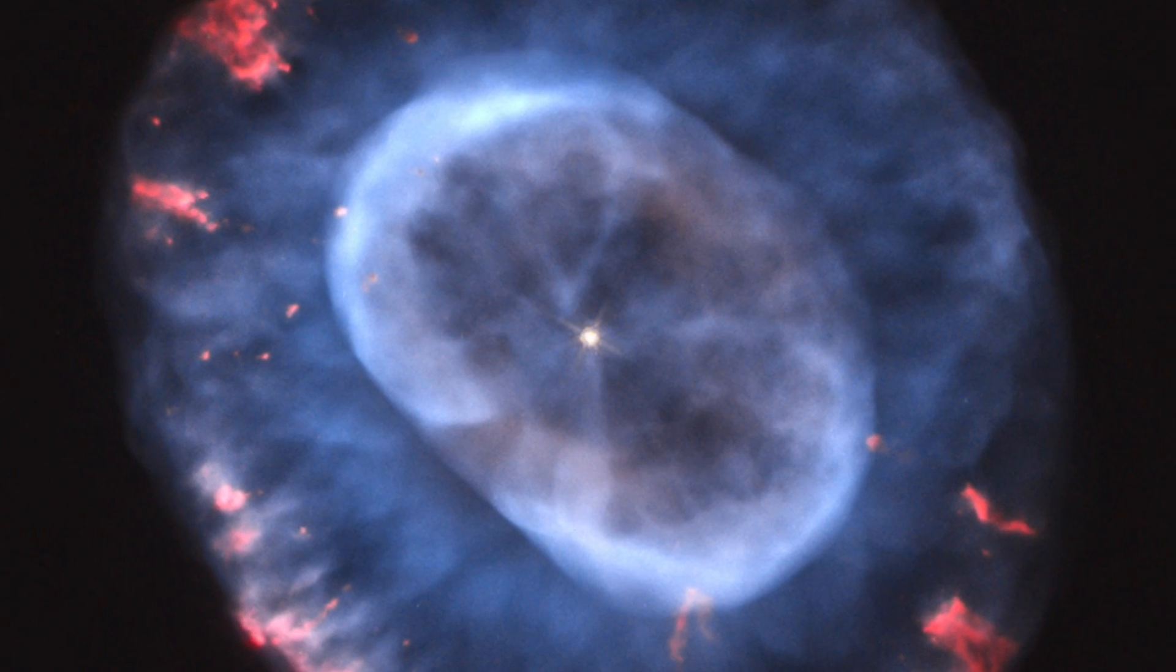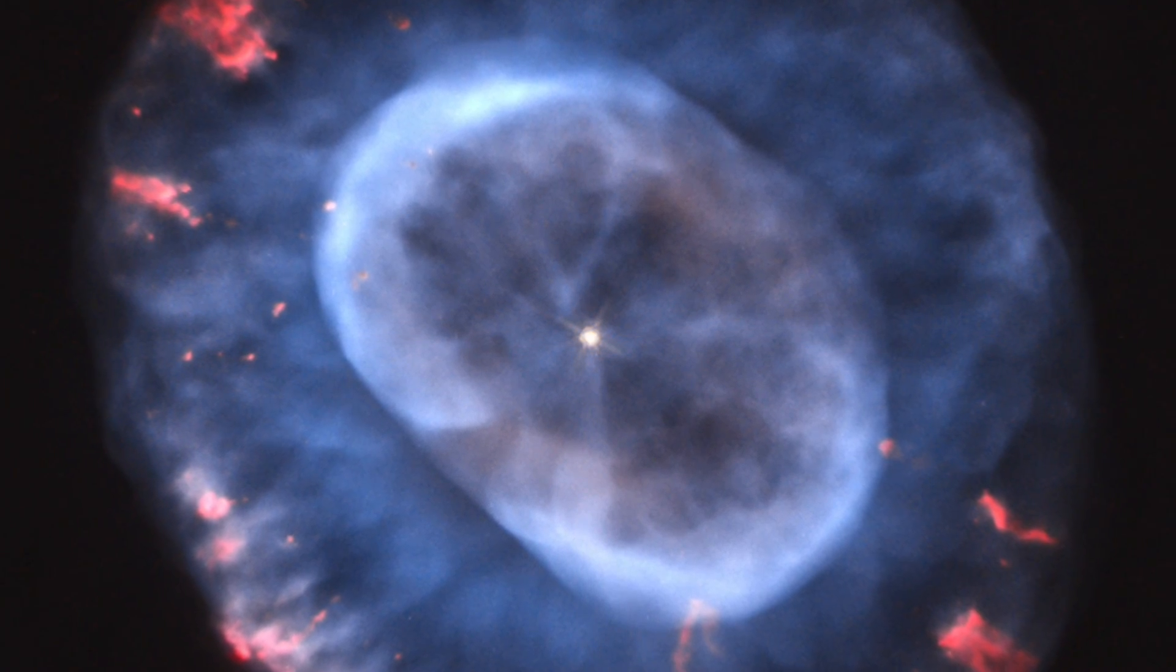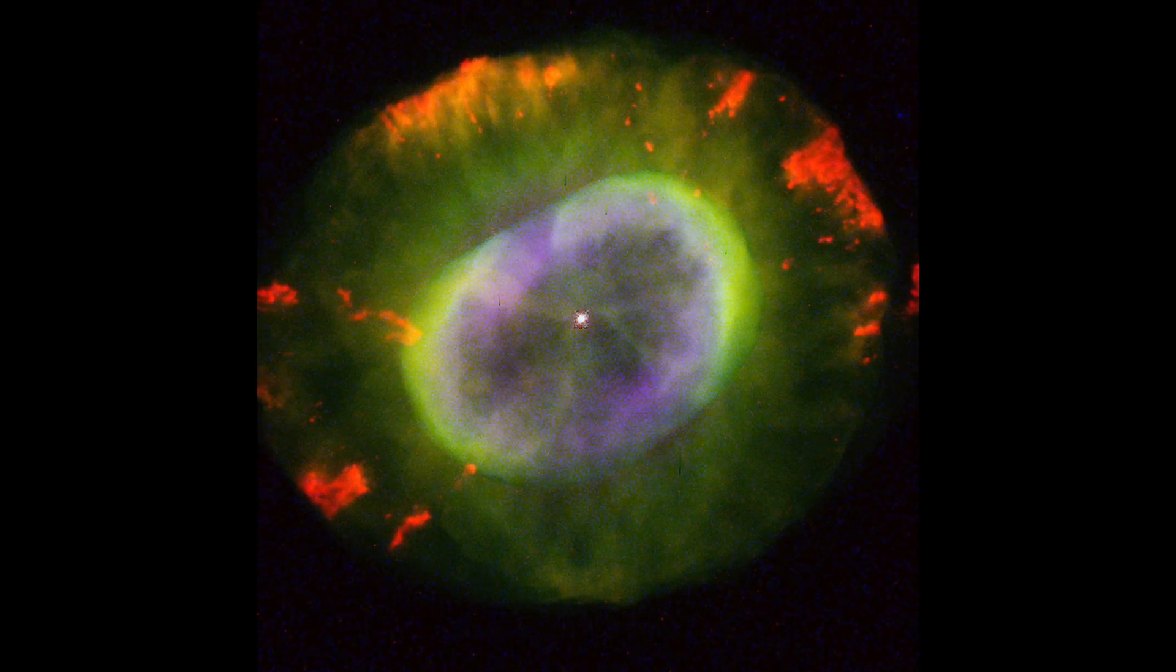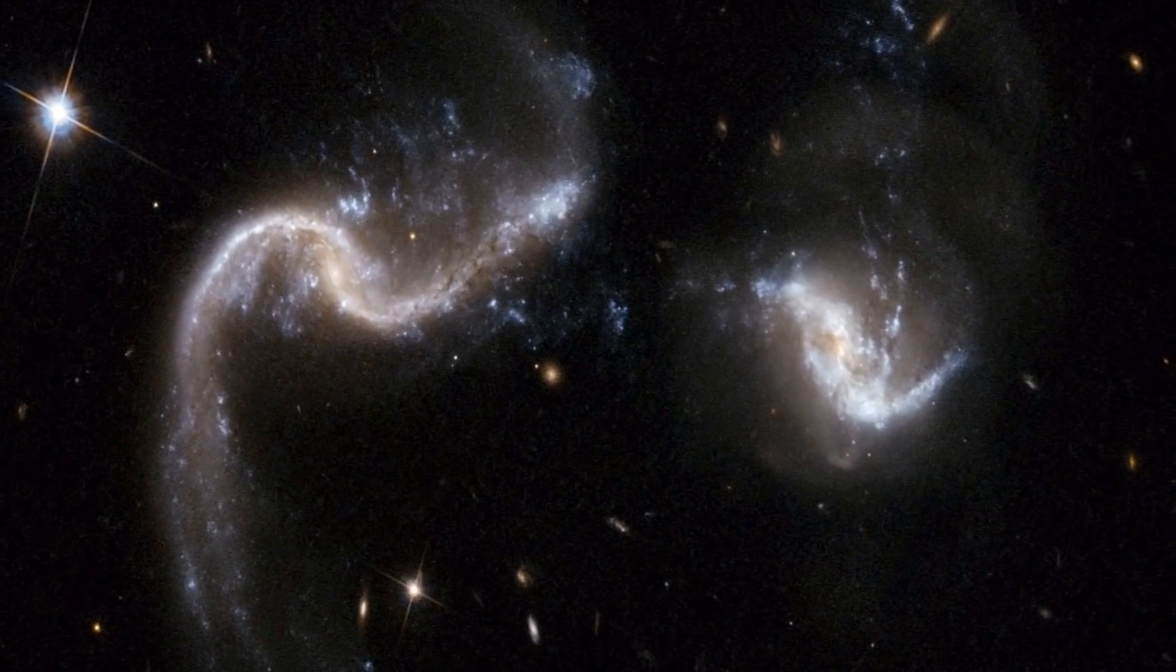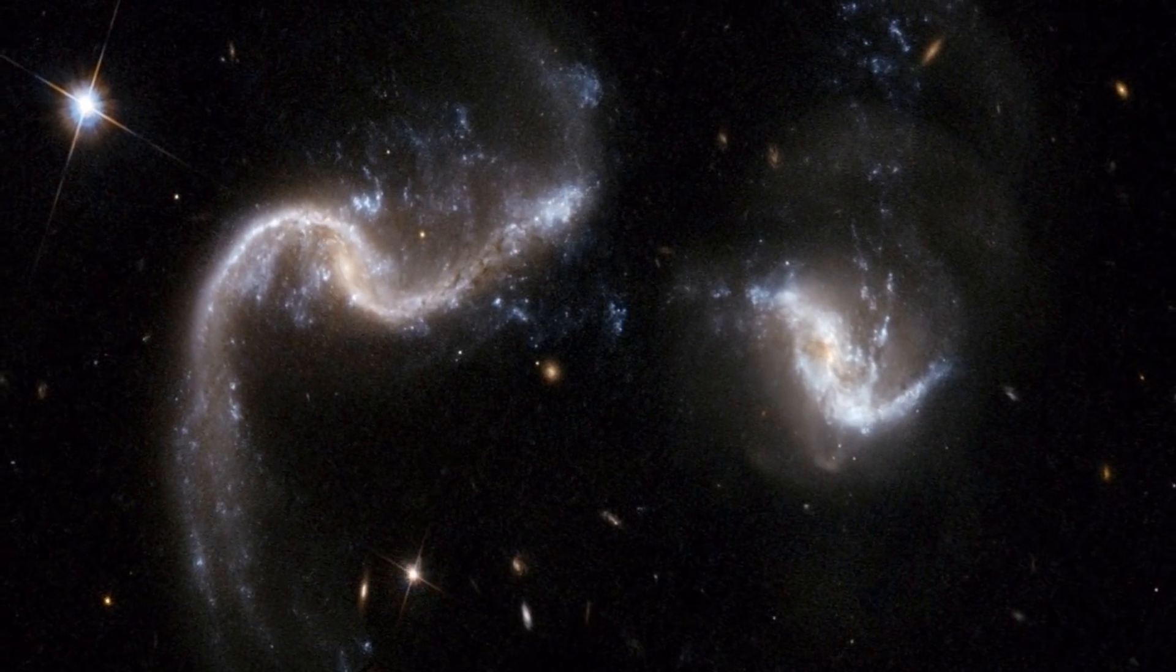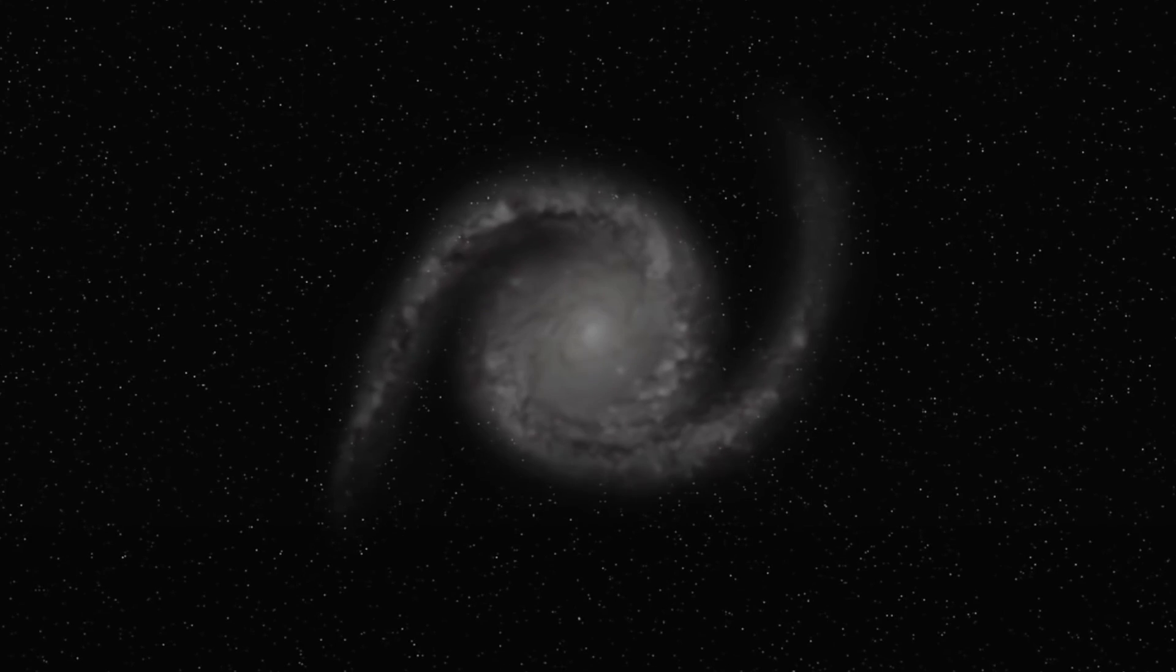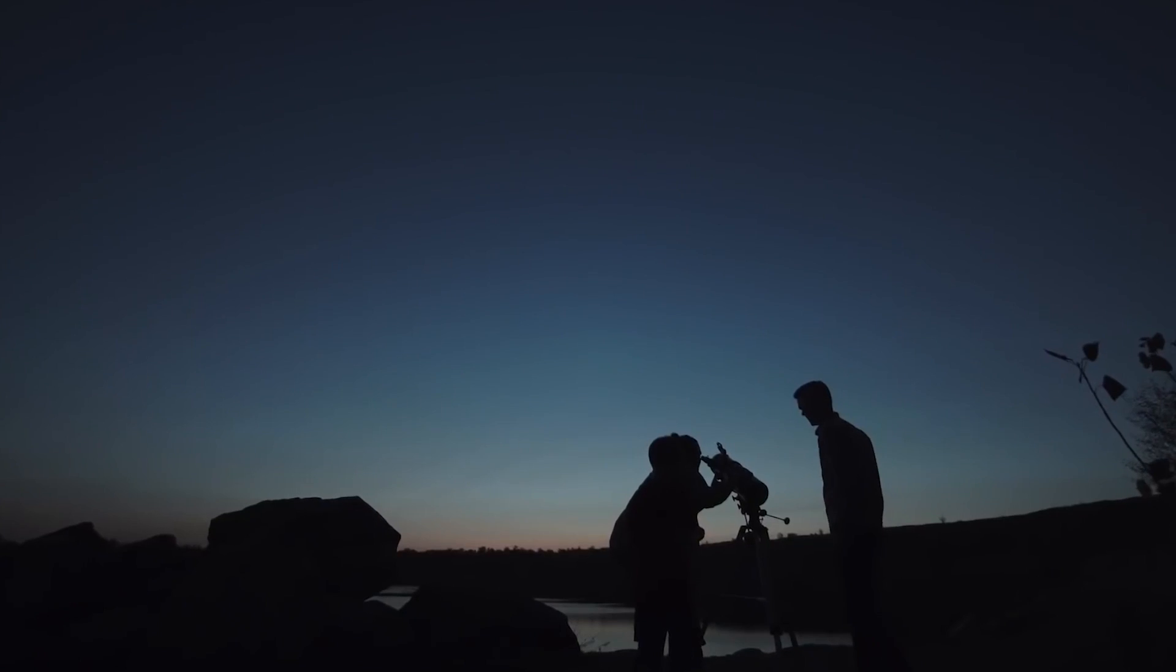NGC-6891 is referred to as a planetary nebula by astronomers, a phrase derived from a previous misidentification with planets when telescope technology was still in its infancy. We now know that nebulae like these emerge when smaller stars shed their gas late in their lives.